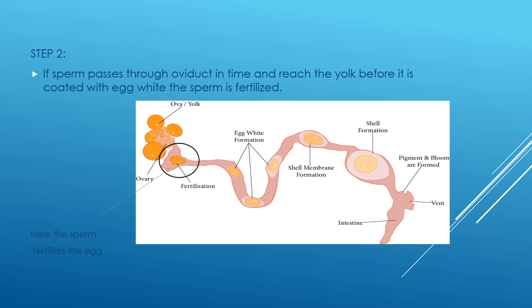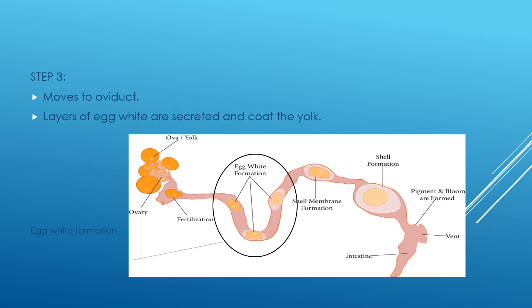Here the sperm fertilizes the egg — you can see in the picture. After that, it moves into the oviduct. The oviduct is a tube through which an egg passes from an ovary, and the layers of egg white are secreted around the yolk.